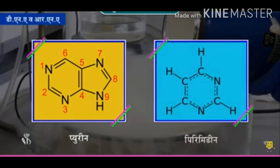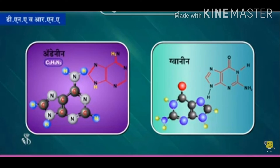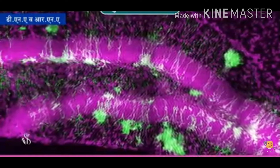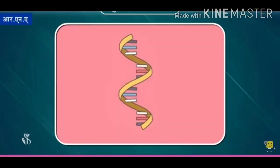This is called the central dogma. mRNA is produced as per the sequence of nucleotides on DNA. Only one of the two strands of DNA is used in the process. The sequence of nucleotides in mRNA being produced is always complementary to the DNA strand used for synthesis. There is uracil in RNA instead of thymine. This process of RNA synthesis is called transcription.